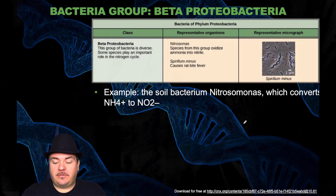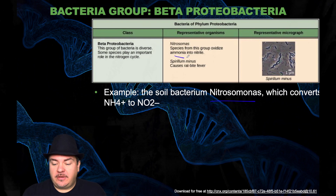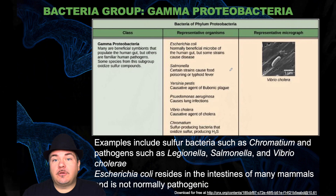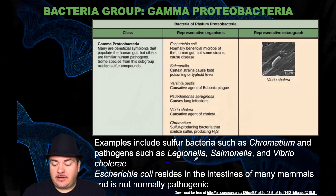Next we have the beta proteobacteria. An example is Nitrosomonas, which oxidizes ammonia into nitrate. Next is the gamma proteobacteria. Examples include the sulfobacteria Chromatium and pathogens such as Legionella, Salmonella, and Cholera.